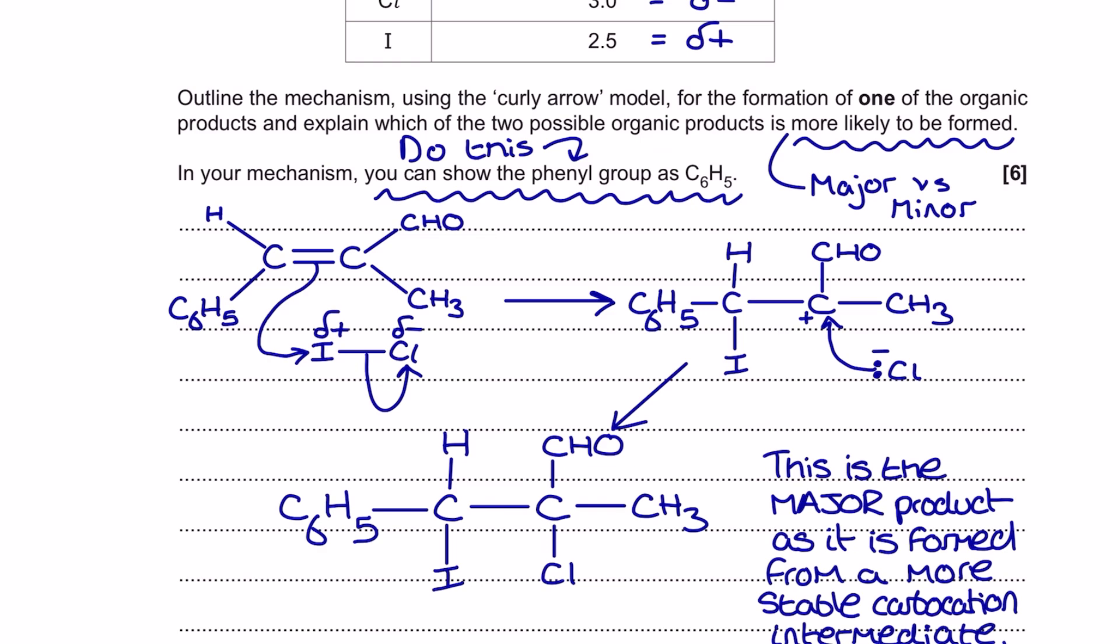You've also been told that in your mechanism you're able to draw the phenyl group just as C₆H₅. If that wasn't even more of a clue that you're not meant to be reacting the phenyl group, that benzene ring parts of the molecule, then I don't know what is.